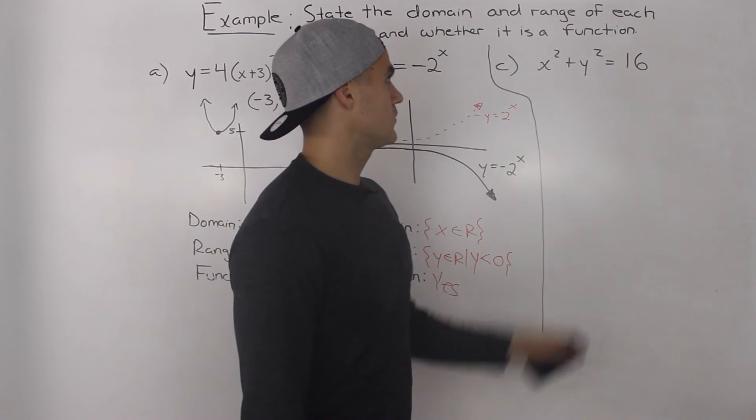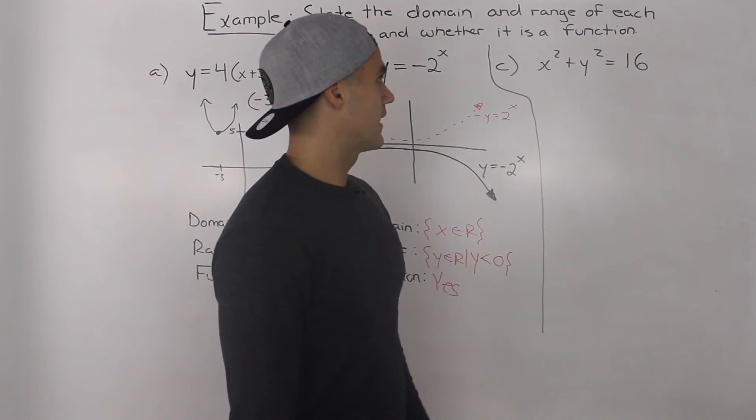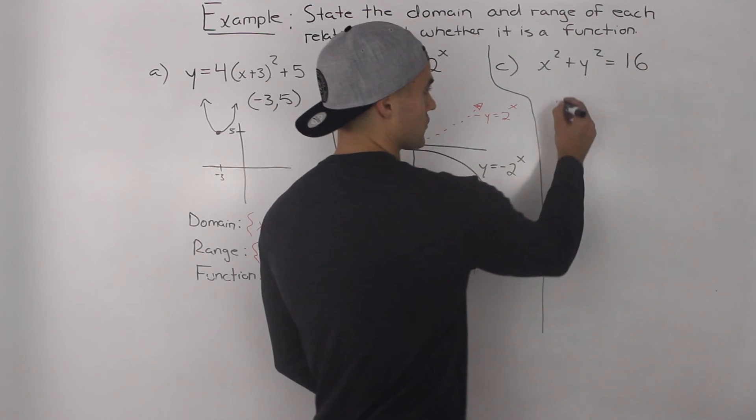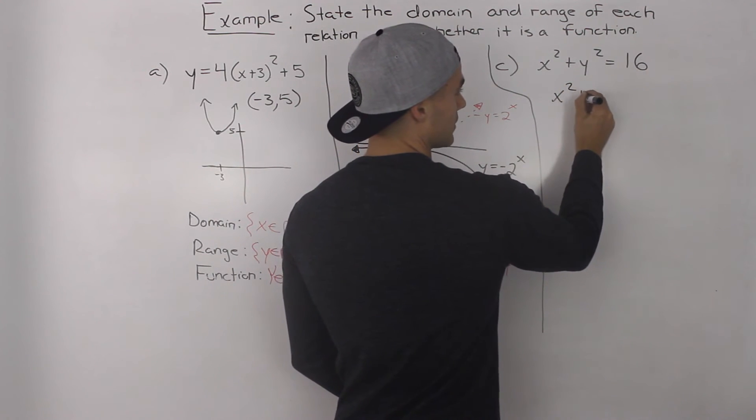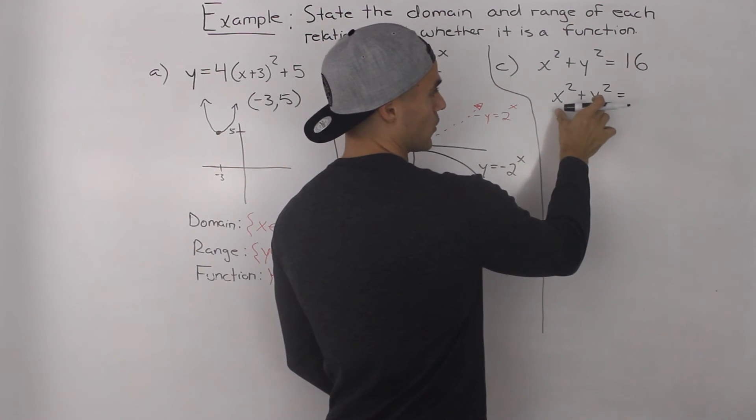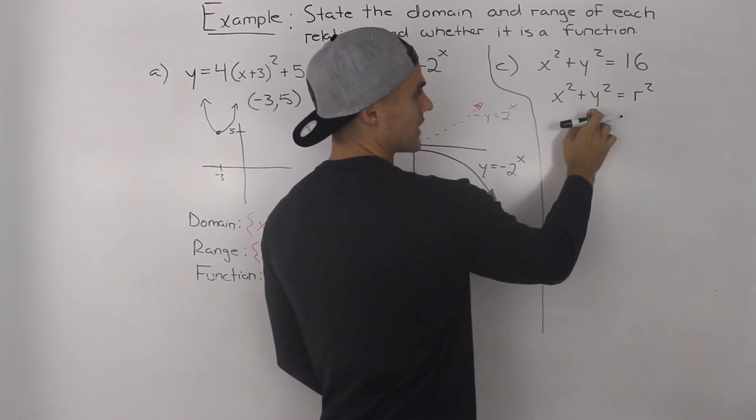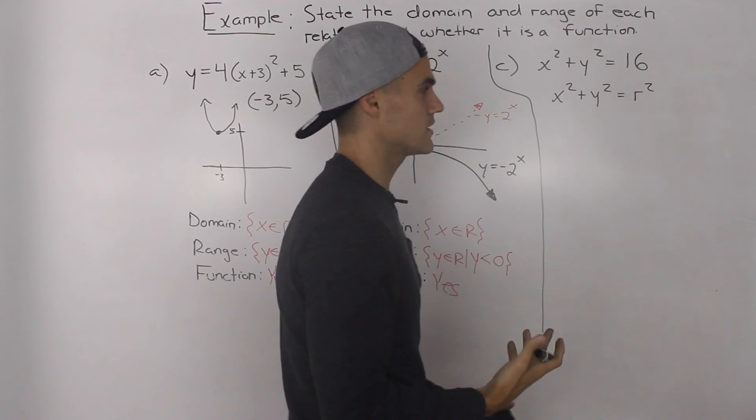Moving on to part c, we got x squared plus y squared is equal to 16. And by this point, you should recognize that x squared plus y squared is an equation of a circle. So the general equation is x squared plus y squared is equal to the radius squared.